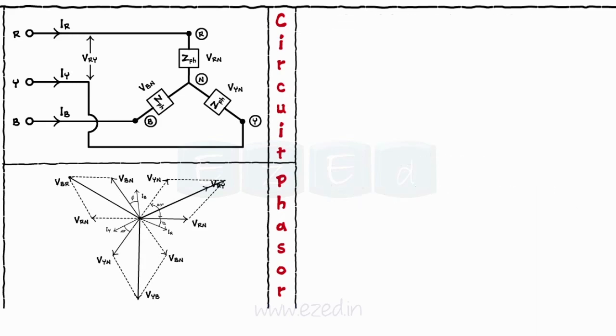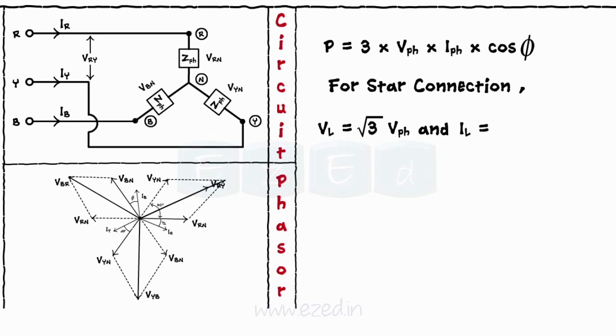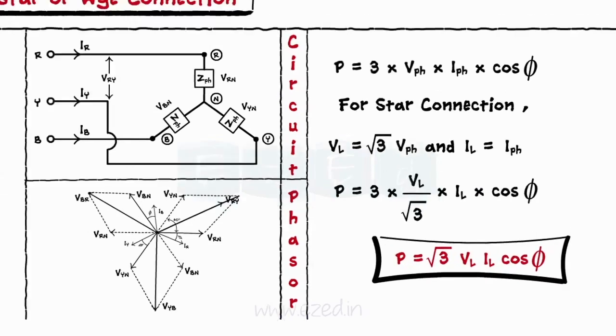The power is given as P equals 3 times Vph Iph cos phi. But Vl equals root 3 Vph and Il equals Iph. Hence, power equals root 3 Vl Il cos phi.